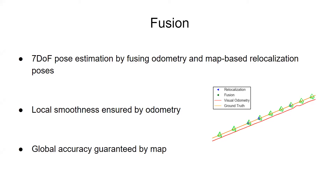In addition to integration into the front-end and back-end optimization, we propose to fuse the relocalization estimates with odometry poses in a local pose graph. This way, we aim to combine the advantages of both modules and compute a globally and locally accurate camera trajectory. Specifically, odometry constraints introduce local accuracy and scale consistency. Moreover, due to the relocalization module, which estimates relative transformation with respect to 7 degrees-of-freedom map poses, we are able to lift the local coordinate frame to the global one and estimate 7 degrees-of-freedom fused poses with scale.